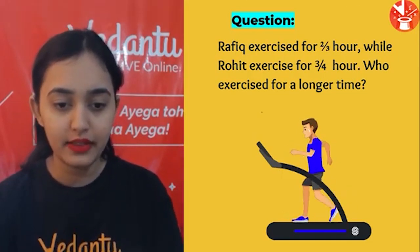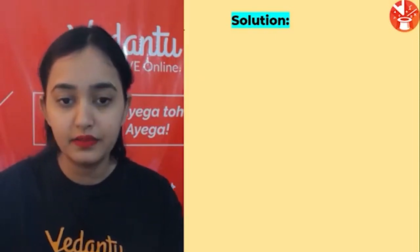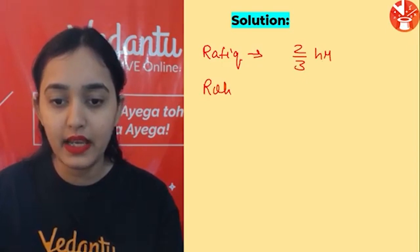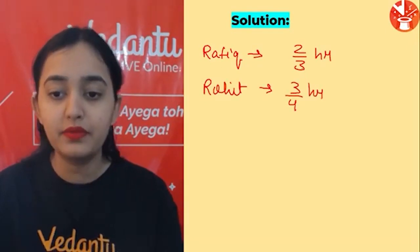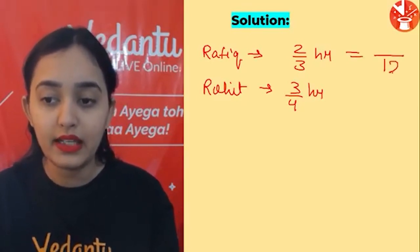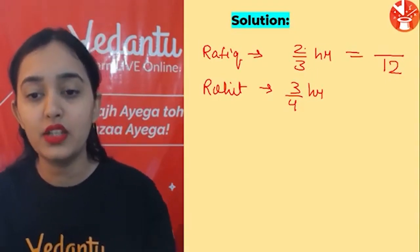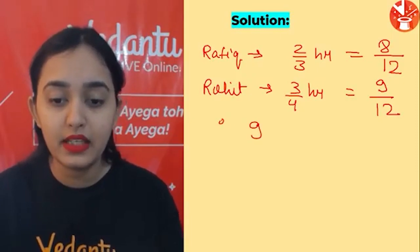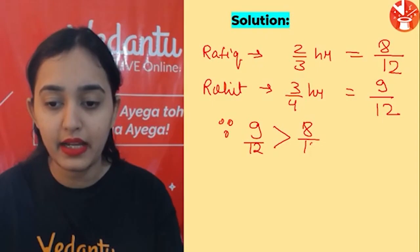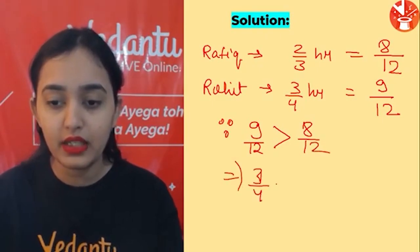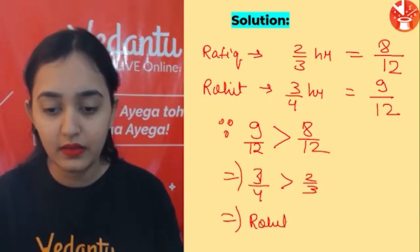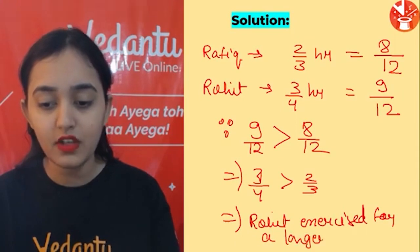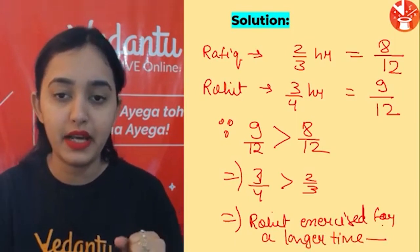So it is given that Rafiq exercised for two-thirds of an hour and Rohit exercised for three-fourths of an hour. Ab 3 aur 4 ka LCM kya hota hai — 12. So we convert: 2/3 = 8/12 and 3/4 = 9/12. Since 9/12 is greater than 8/12, this implies 3/4 > 2/3, so Rohit exercised for a longer time.